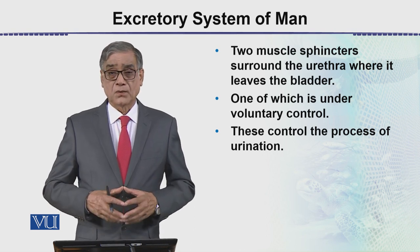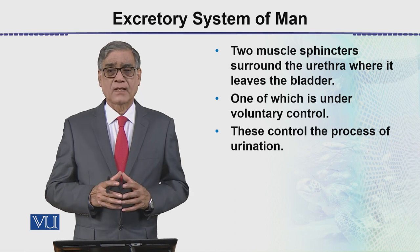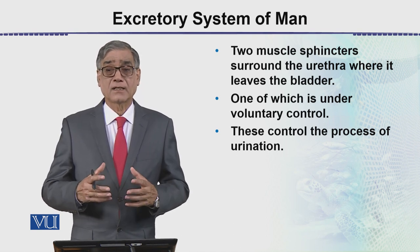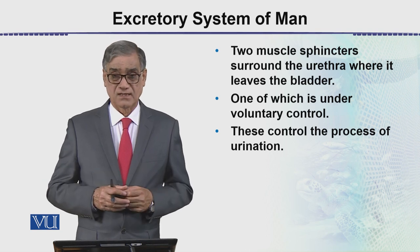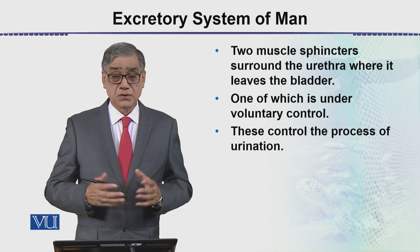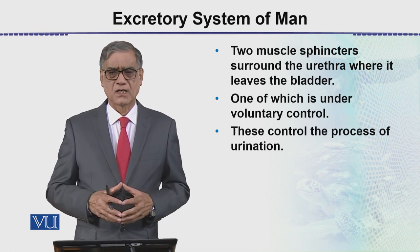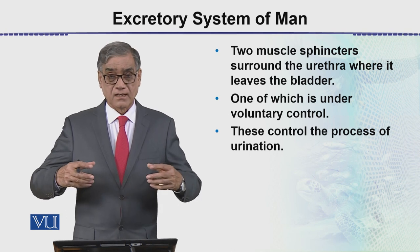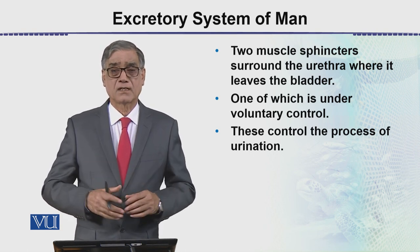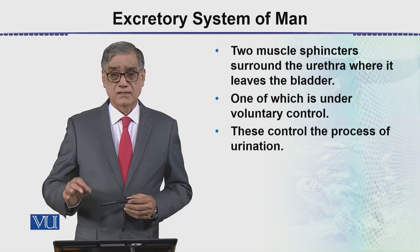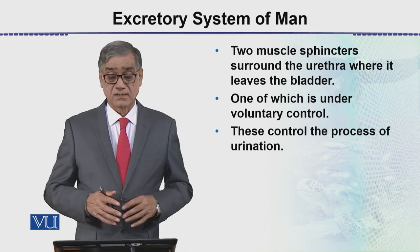One of these sphincters is under voluntary control, and it controls the process of urination. Sometimes we can stop the process of urination, but a time comes when it becomes uncontrollable. It is the sphincter muscles which control this process. In early age, children cannot tell whether they are feeling the urge to urinate or not — around two to three years of age they start telling. So early on, the sphincters are not voluntary, but later on they come under voluntary control. This is all about the excretory system of man.